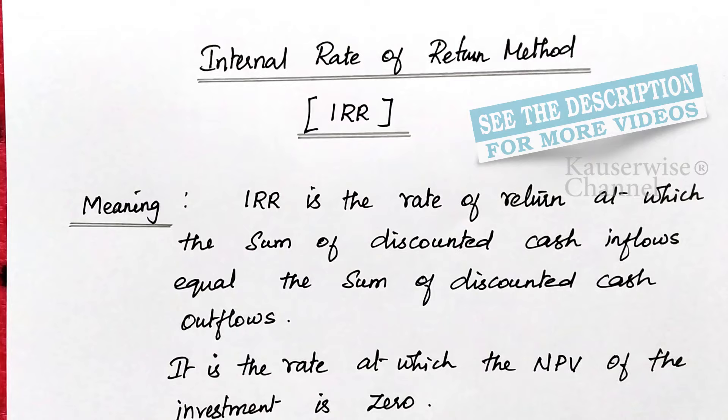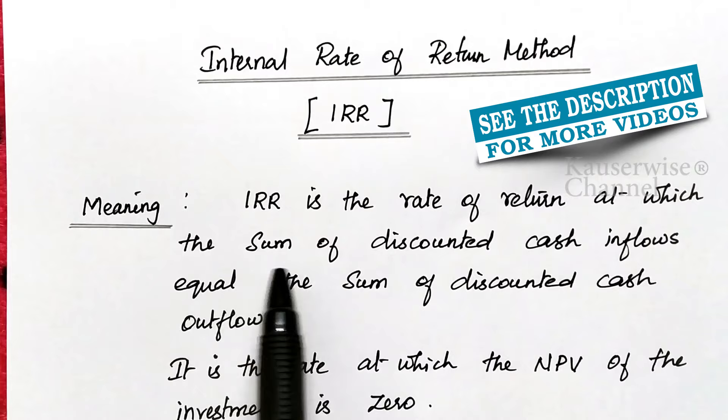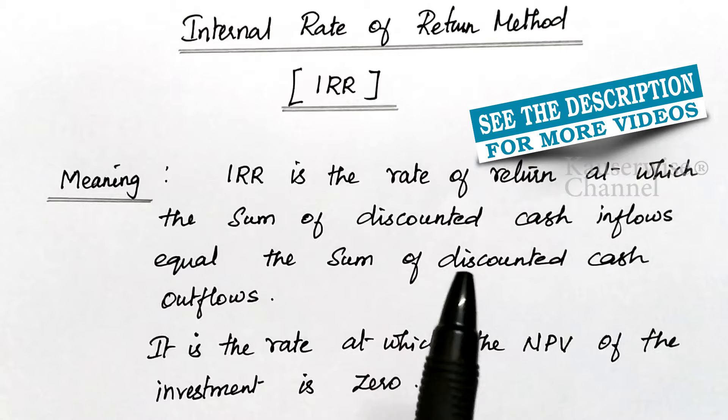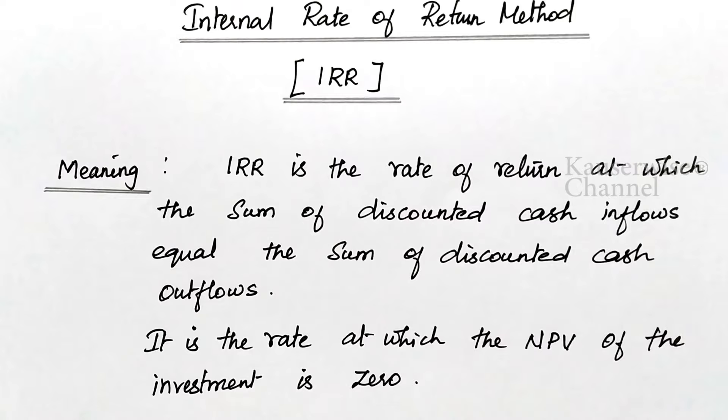IRR is the rate of return at which the sum of discounted cash inflows equals the sum of discounted cash outflows. It is the point where discounted cash inflow equals discounted cash outflow — the rate at which the net present value of the investment is zero. That particular rate is called the Internal Rate of Return.